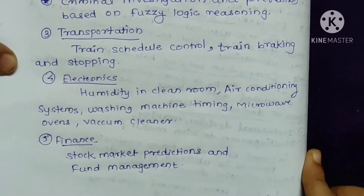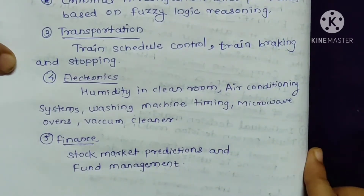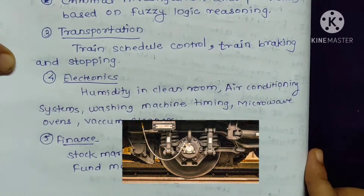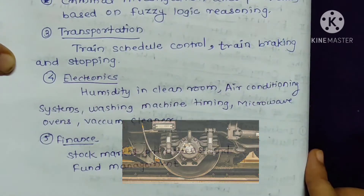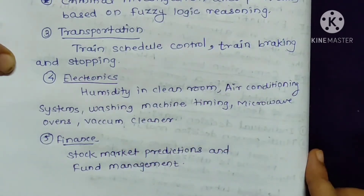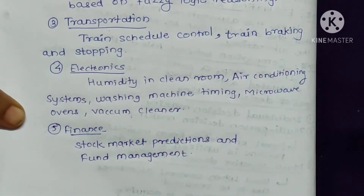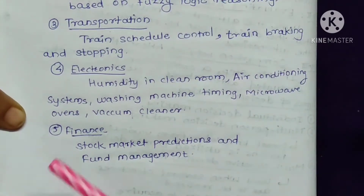One major area of fuzzy logic is transportation. Train schedule control, train braking, and train stopping can be done with the help of fuzzy logic. We also use various electronic devices which use the concept of fuzzy logic.